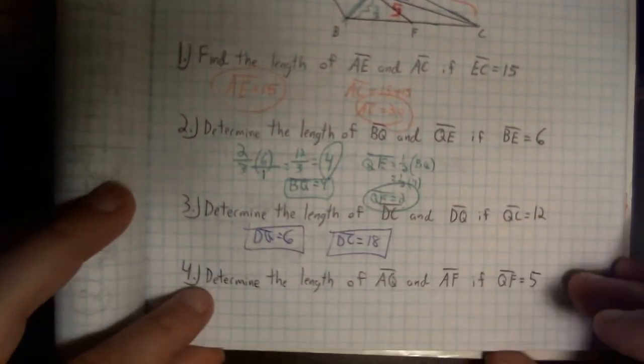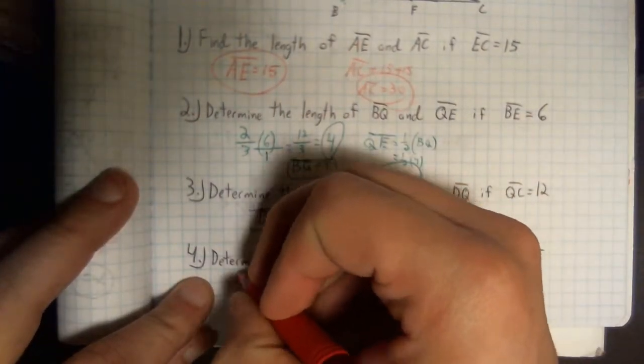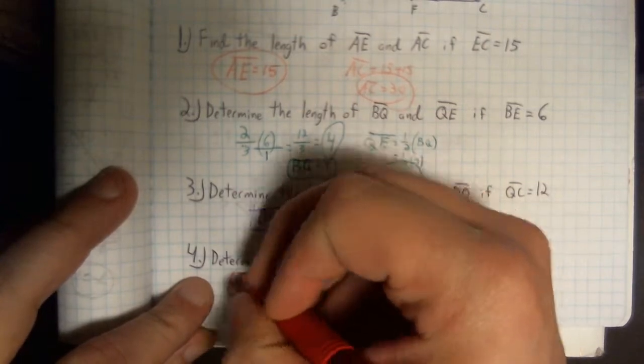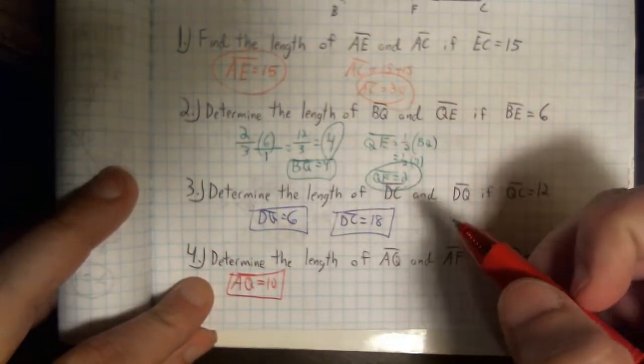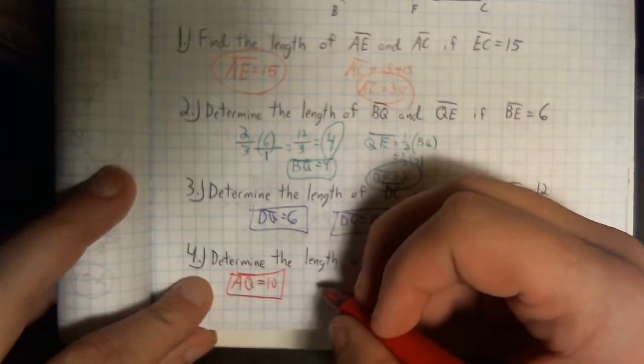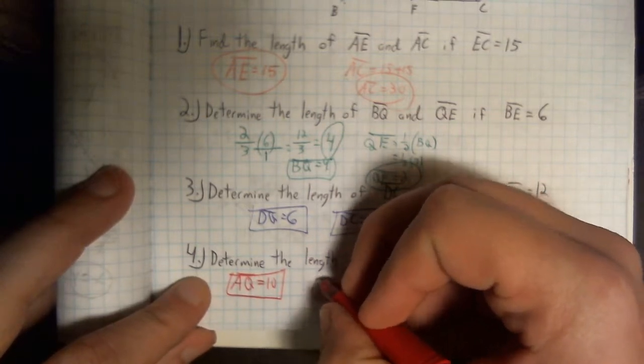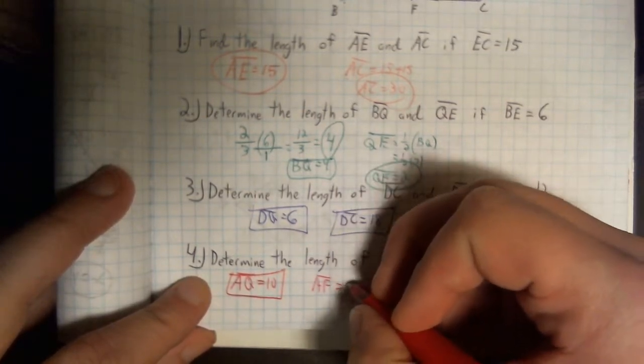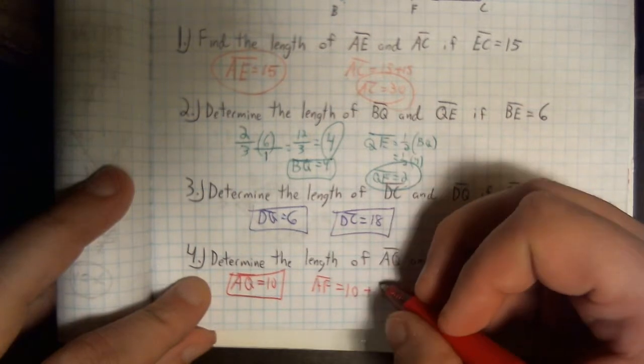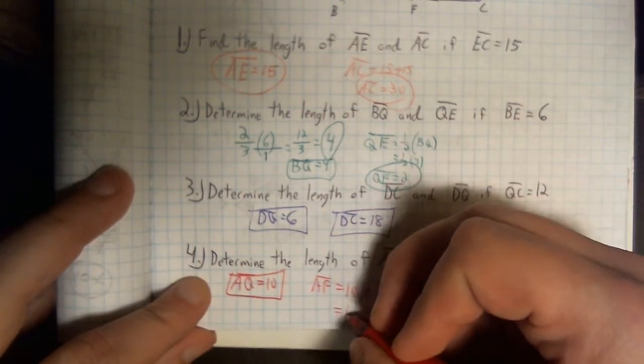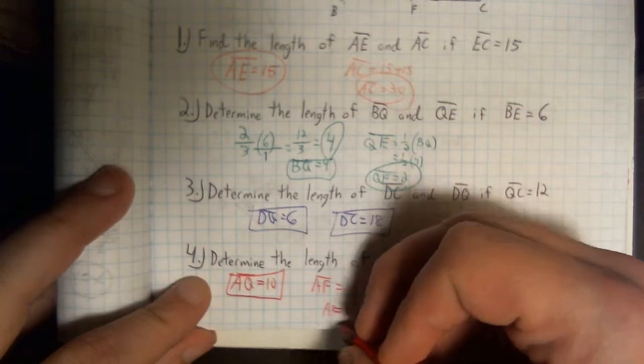So, when I go down to write my answers, AQ we just found was 10. And the entire length AF is going to be those two pieces added together. AQ is 10. QF is 5. That's going to give us a length of 15 for AF.